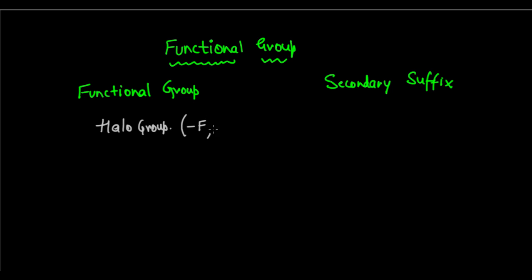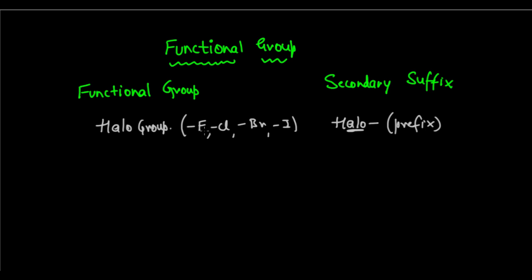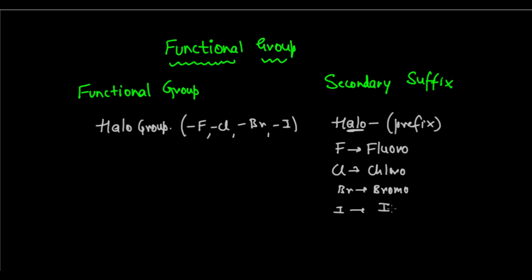For the halo group — which is either fluorine, chlorine, bromine, or iodine — it is attached as a prefix. Specifically: for F it is 'fluoro', for chlorine it is 'chloro', for bromine it is 'bromo', and for iodine it is 'iodo'. So these are all added as prefixes when a halo group is present in an organic compound.